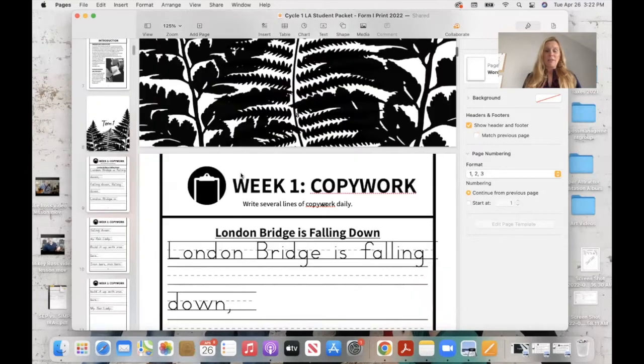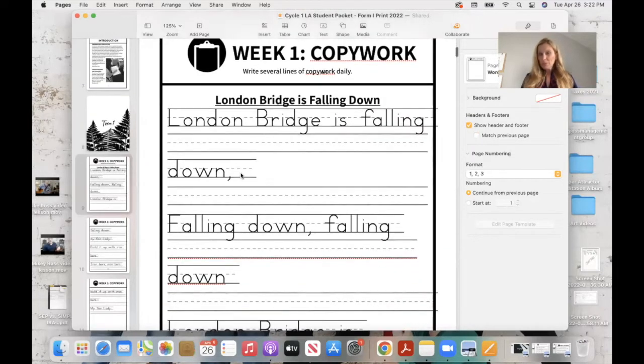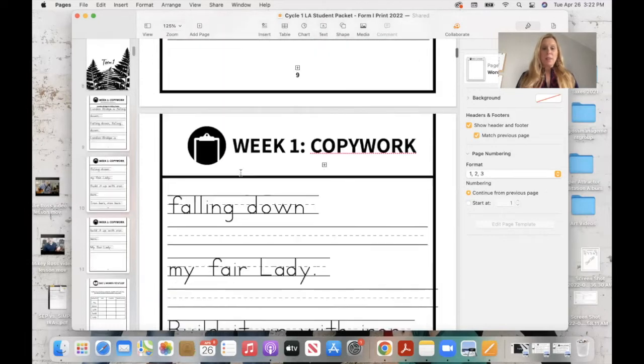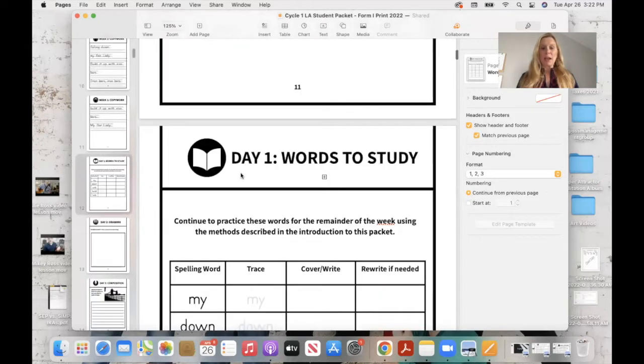Each week they have a copywork passage. This is for the whole week. They're going to do a little bit each day, quality over quantity. Then their spelling words for the week come from this passage. Charlotte Mason, I love this approach because she always says students have to be curious, they have to have a captivating idea that captures their attention. They don't want to learn a bunch of rote words that don't make any sense and they just have to memorize a bunch of rules. The words have to be beautiful and meaningful.